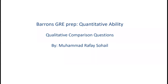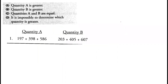Today we'll be doing qualitative comparison questions. Our first question is 197 plus 398 plus 586 versus 203 plus 405 plus 607. Since 203 is more than 197, 405 is more than 398, and 607 is more than 586, quantity B is obviously greater than quantity A. Hence option B is correct.